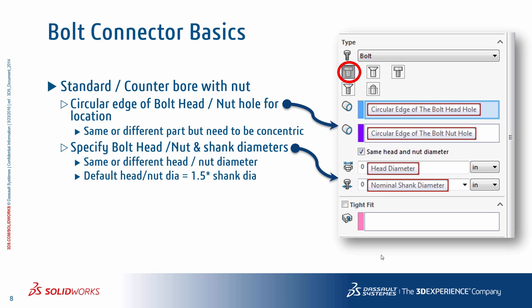Next is the countersink with nut bolt connector. Here, unlike the previous case, instead of the circular edge for the bolt head, you select the conical face, and behind the scenes the program automatically constrains all the nodes on the conical face with the beam element that represents the bolt shank length. The rest of the selections are exactly the same as the standard bolt and nut option. When using bolted connections, you really don't have to use any split lines, because this is internally taken care of during the meshing process.